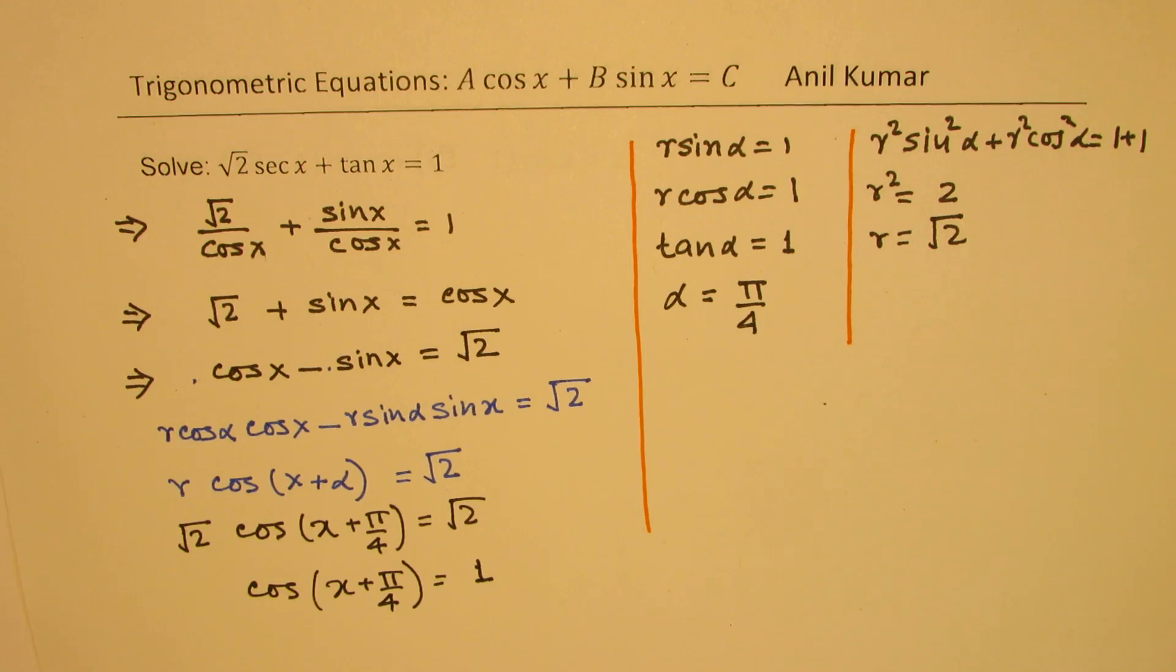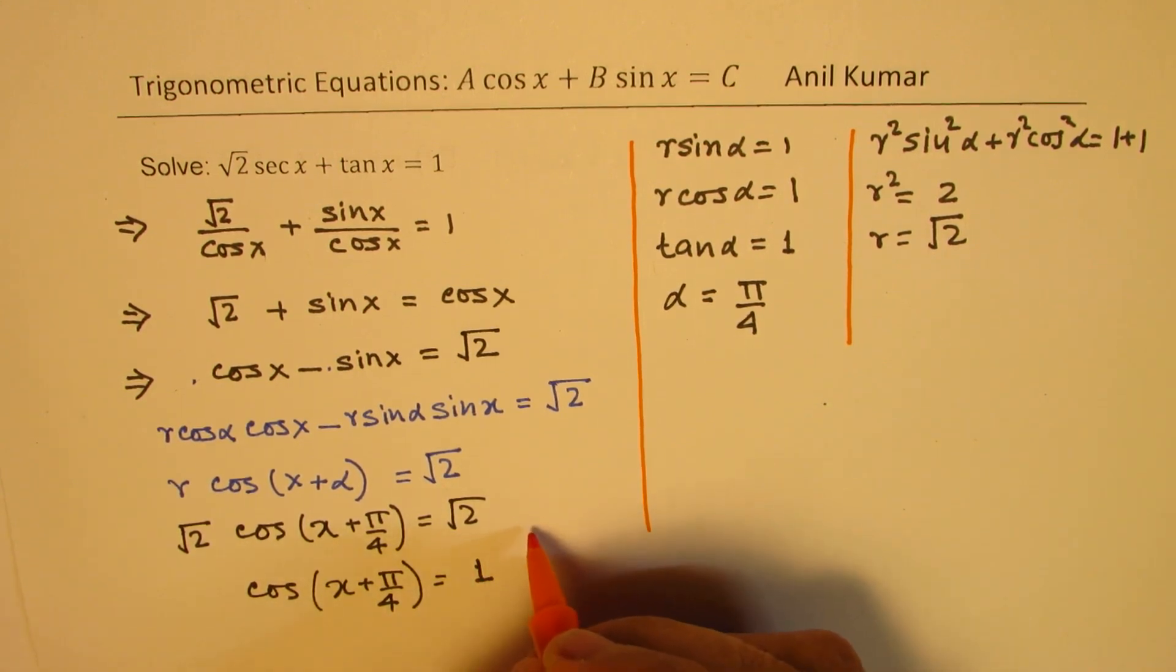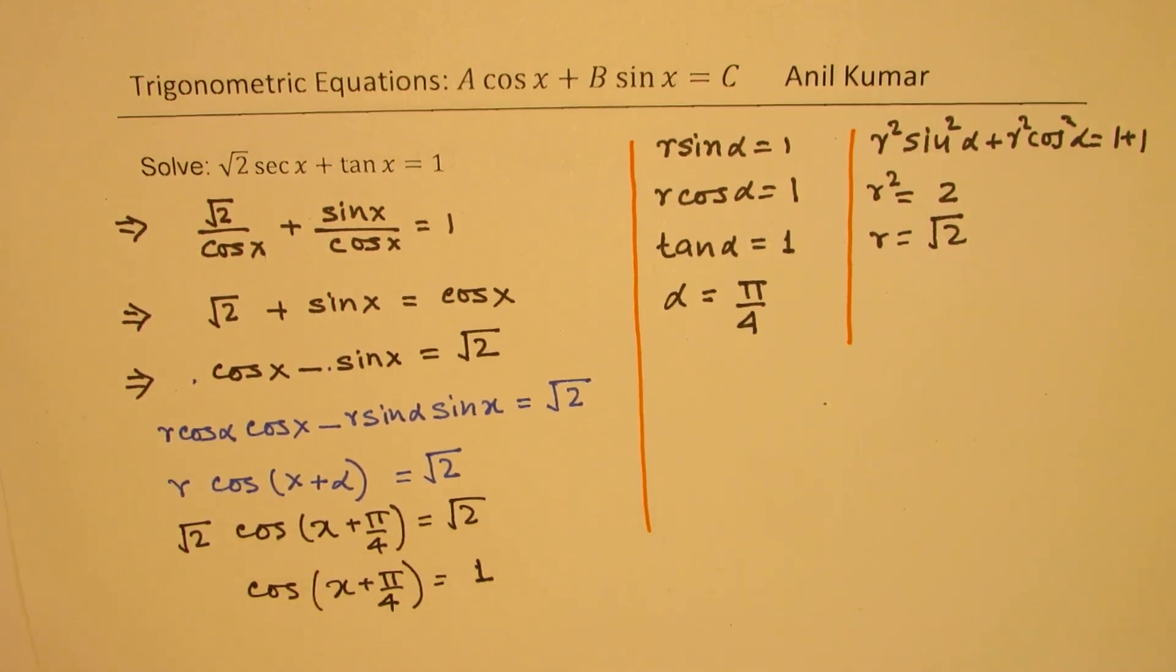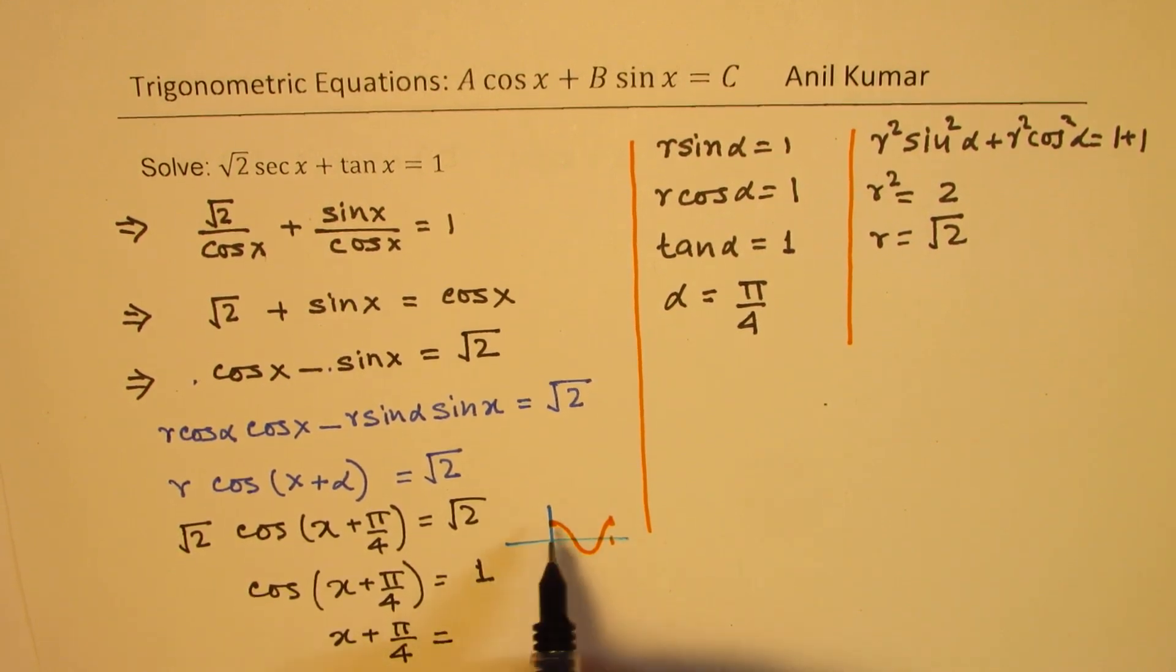Now when is cosine 1? We can always sketch and see. So in one cycle, cos is 1 at 0 or 2 pi. So that means that x plus pi by 4 is equal to 0 or 2 pi.